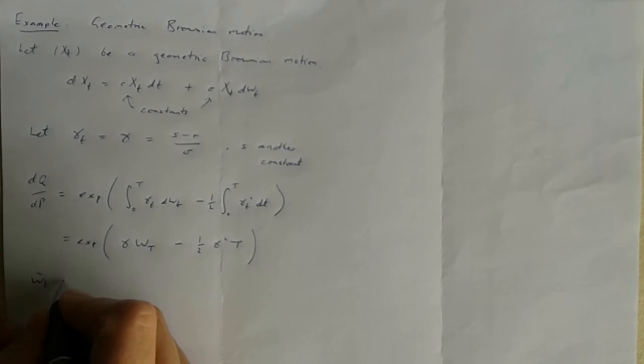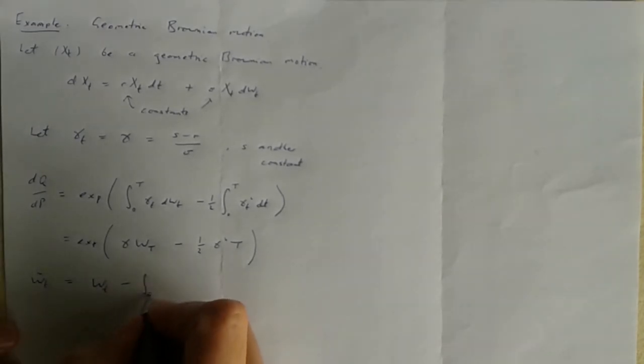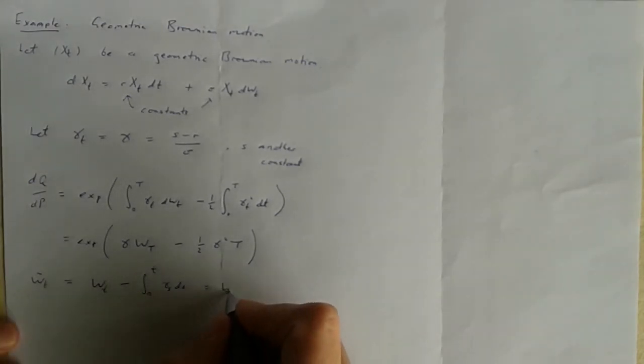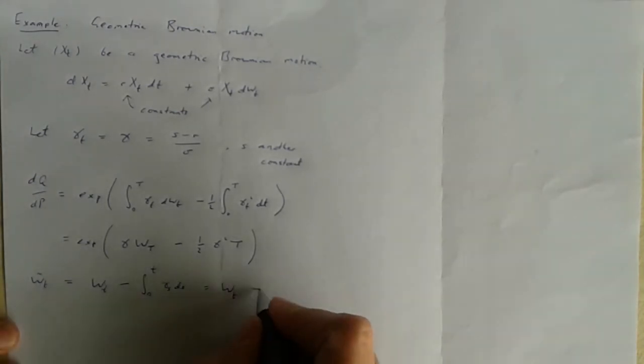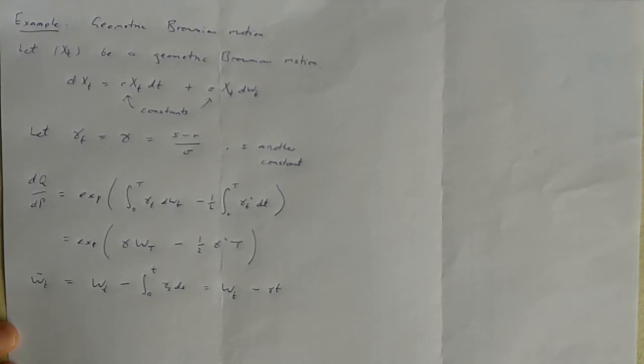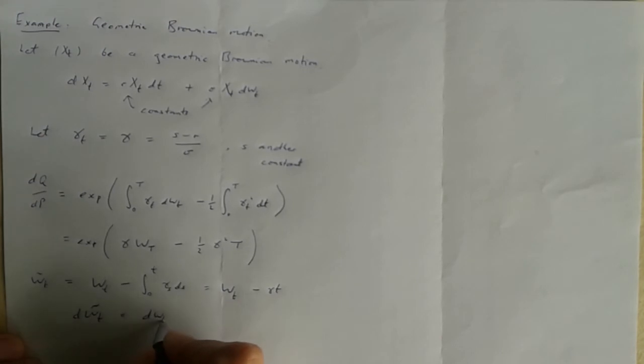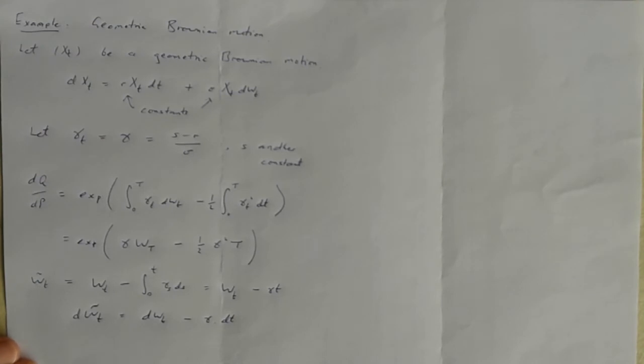What about this guy, the Wt tilde? What's that in this example? Well, in general, that's supposed to be this. But again, since gamma is just a constant, it reduces just to that. So the only change we're making here between the gap between the W and the W tilde is to add or subtract, depending which way we're going, a linear term, constant times t. Here it is in differential form.